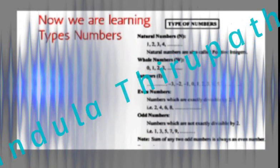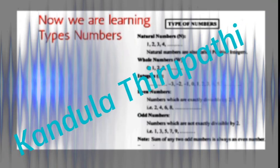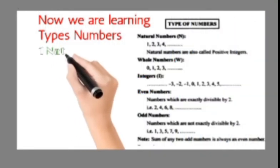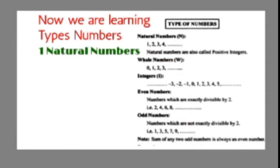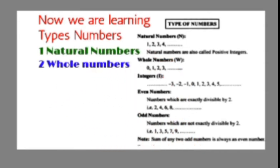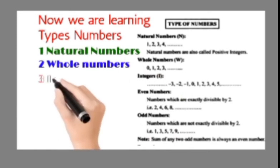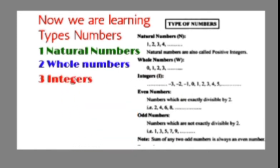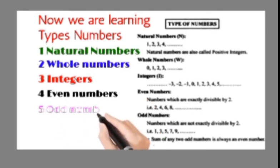Types of Numbers. Now we are learning types of numbers: 1. Natural Numbers, 2. Whole Numbers, 3. Integers, 4. Even Numbers, 5. Odd Numbers.